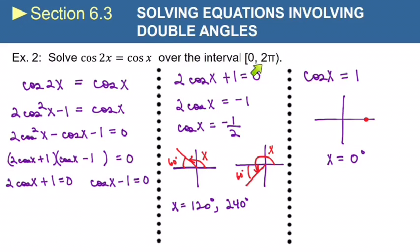Now, they did specify 0 to 2π, that's radians, so I'm going to convert each one of these answers to radians. And so, 120 degrees is the equivalent of 2π over 3 radians, 240 degrees is 4 times 60, so that's 4π over 3 radians, and 0 degrees is 0 radians. And those are our three solutions for this equation.